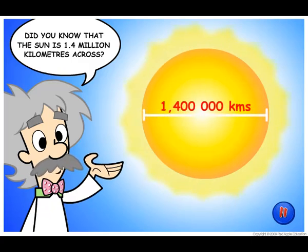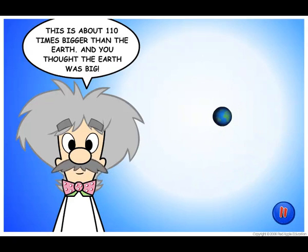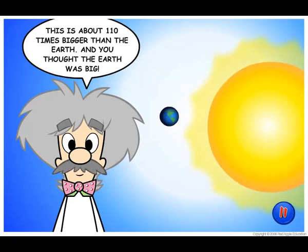Did you know that the Sun is 1.4 million kilometers across? This is about 110 times bigger than the Earth, and you thought the Earth was big.